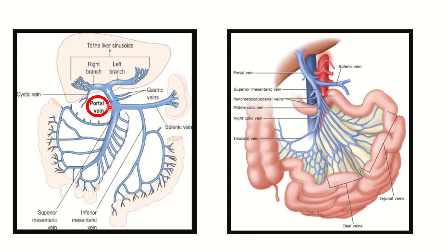Now in this picture we can see the portal vein. It enters into the liver, and we can see its tributaries such as the gastric vein, superior mesenteric vein, inferior mesenteric vein, and splenic vein. These veins — gastric, splenic, inferior mesenteric, and superior mesenteric — are tributaries of the portal vein, not the inferior vena cava.